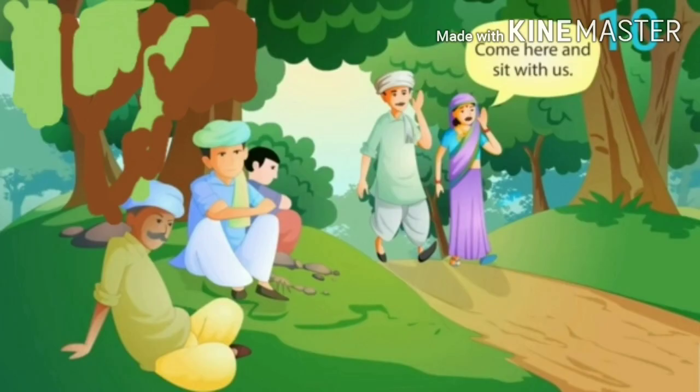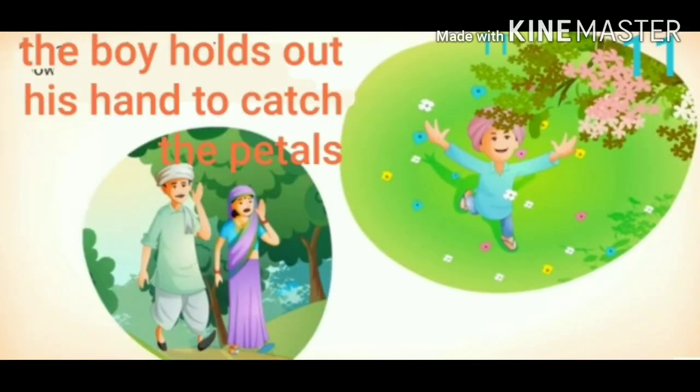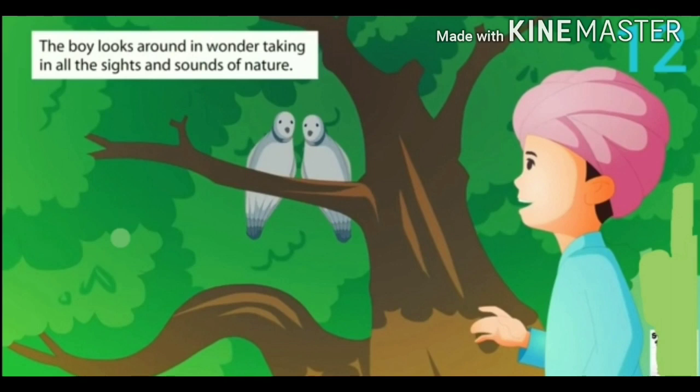But they elude him — elude means avoid, they escape from him. The family feels tired and takes shelter under a tree. Suddenly a shower of freshly bloomed flowers falls upon the child, and he holds out his hand, forgetting his parents, and runs to catch the petals. He then hears the cooing sound of a dove. The boy looks around in wonder, taking in all the sights and sounds of nature — going crazy in that excitement and beauty.